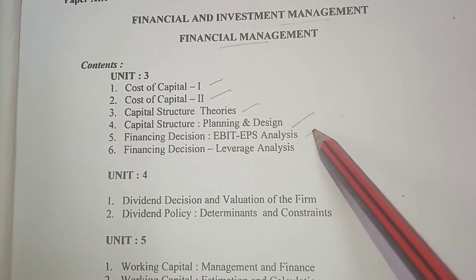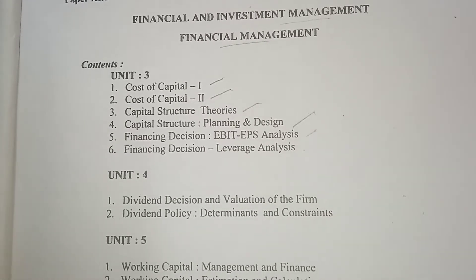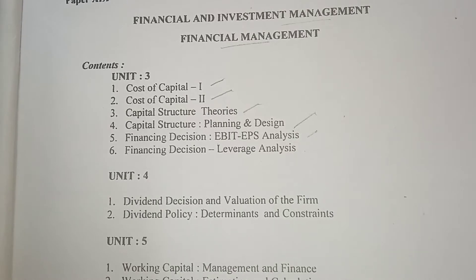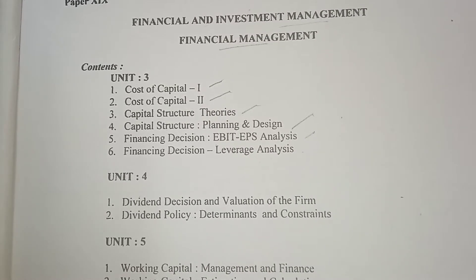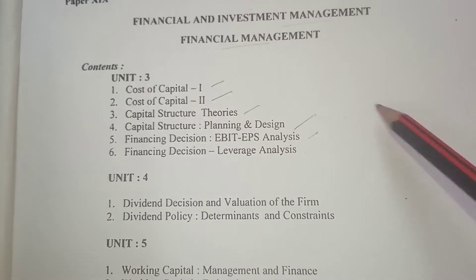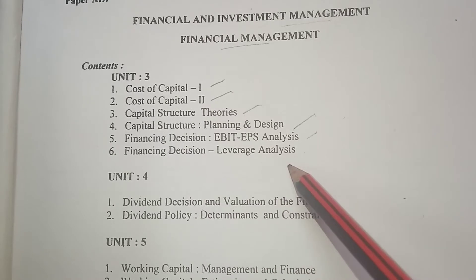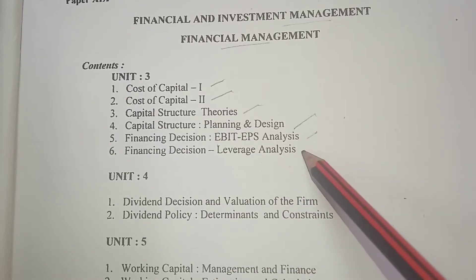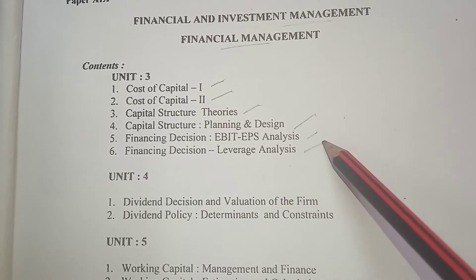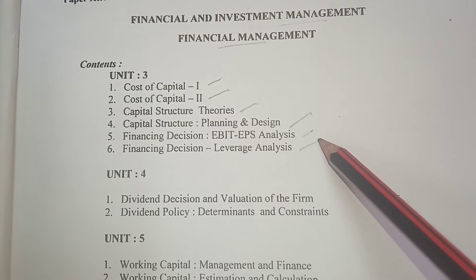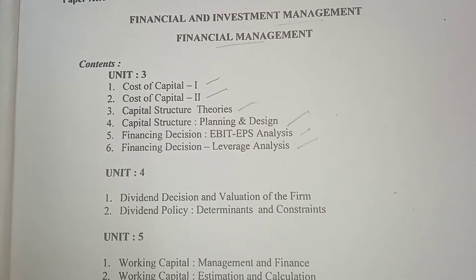Financing decision covers EBIT, EPS — that is profit before, earning before interest and tax. Then financing decision, leverage analysis. Now your unit fourth.